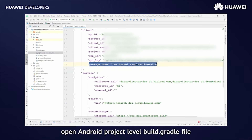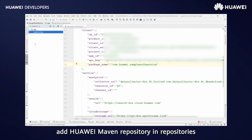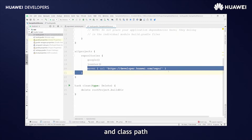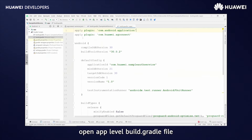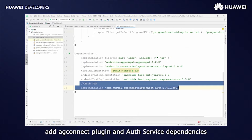Open the Android project-level build.gradle file and add the Huawei Maven repository in repositories and classpath. Open the App-level build.gradle file and add the agconnect plugin and AuthService dependencies.